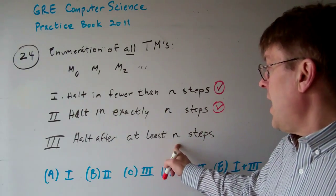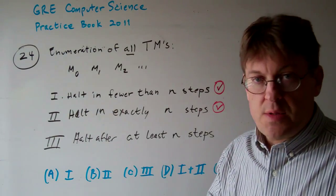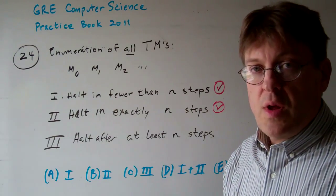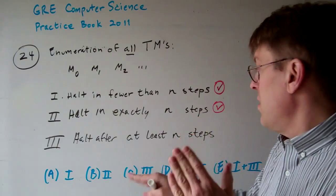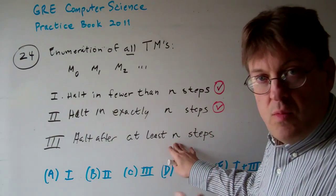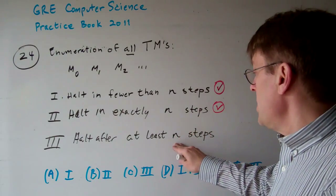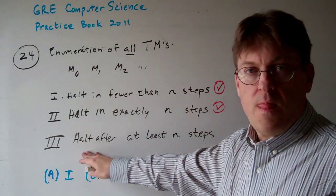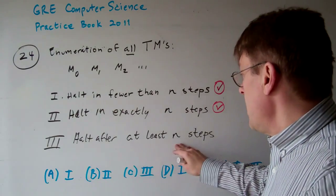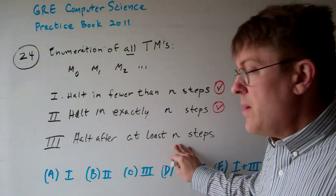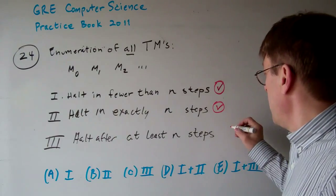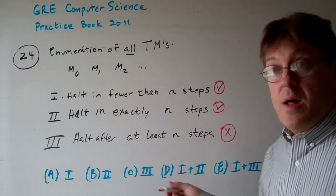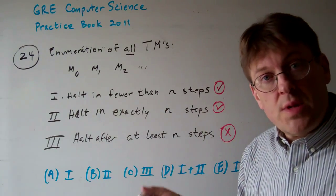Now three, can it halt after at least n steps? We can count how many steps the program completes and you get to n. But we don't know if it will ever halt. So even though we can tell whether or not it's completed n steps, we cannot tell whether or not it will halt after that. It might halt, it might not. So it's not decidable.